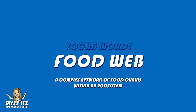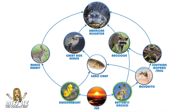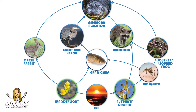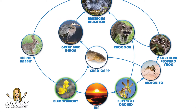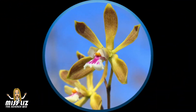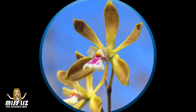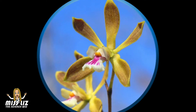Within a food web there are many different types of organisms. Take for example this food web of the Florida Everglades. The organisms in green are called producers. A producer is an organism that can make its own food. Most producers are what we call plants. Producers are found in abundance in most ecosystems and make up the base level of the energy pyramid.